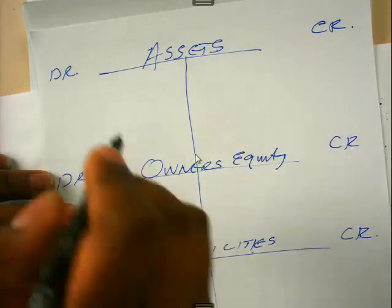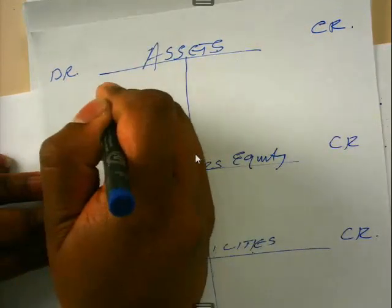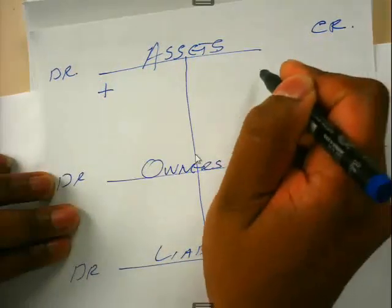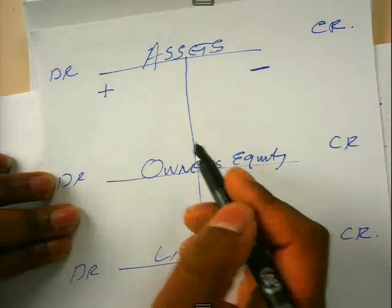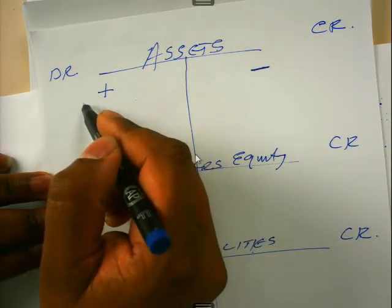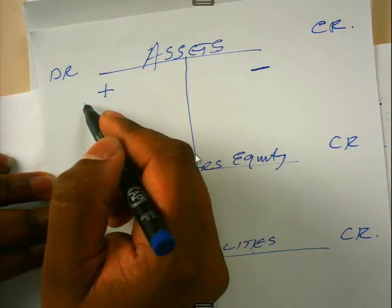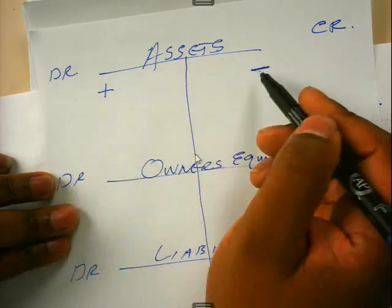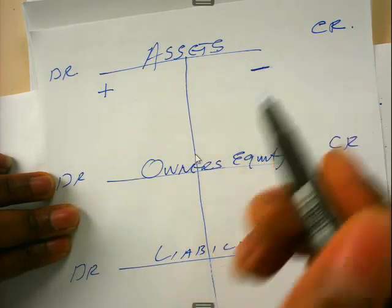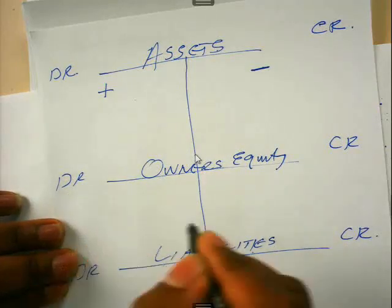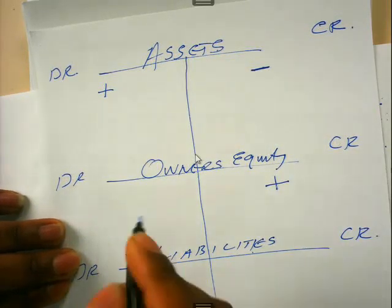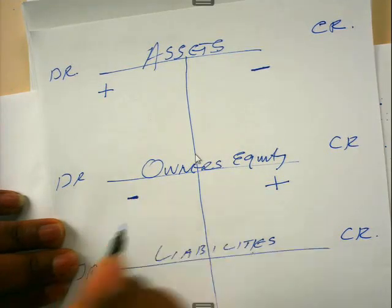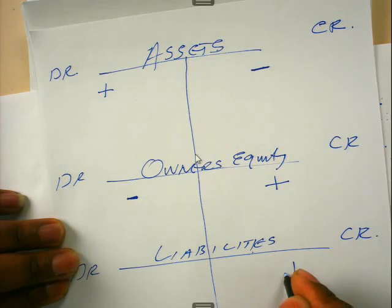The important rule is that assets increase on the debit side and decrease on the credit side. For example, when you buy a new asset you will make an entry on the debit side. When you sell an asset you will make an entry on the credit side. Owner's equity increases on the credit side and decreases on the debit side, and the same applies to liabilities.